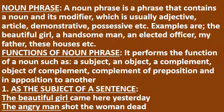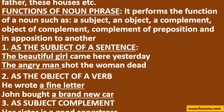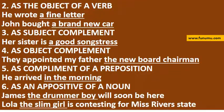1. As the subject of a sentence: 'The beautiful girl came here yesterday.' 'The angry man shot the woman dead.' 2. As the object of a verb: 'He wrote a fine letter.' 'John bought a brand new car.'